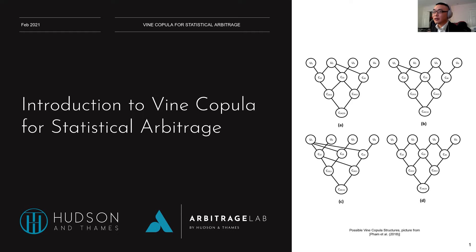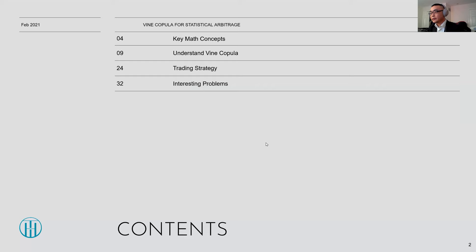I'm going to cover four different parts — those are slide numbers, not chapter numbers. First, a few basic math concepts. Second, understanding vine copula, which takes up the most of the presentation — if you understand the math behind it, you fully understand what this method is about. Third, the trading strategy, which is straightforward once you understand the vine structure. And fourth, some interesting open problems for people who want to do further study in this field.